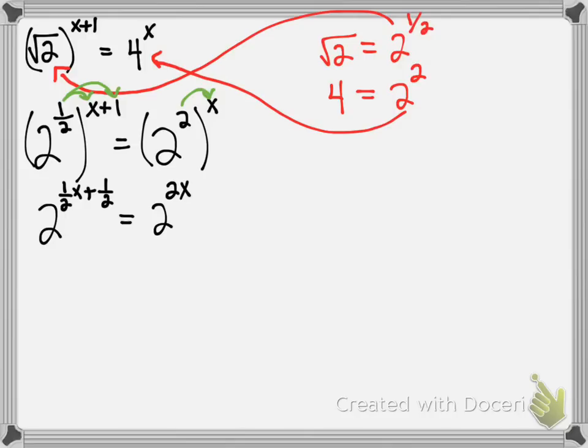Now to solve this equation we need to understand that if we have these bases the same (this 2 and this 2), the bases are the same, then the exponents have to be equal. So we can set them equal.